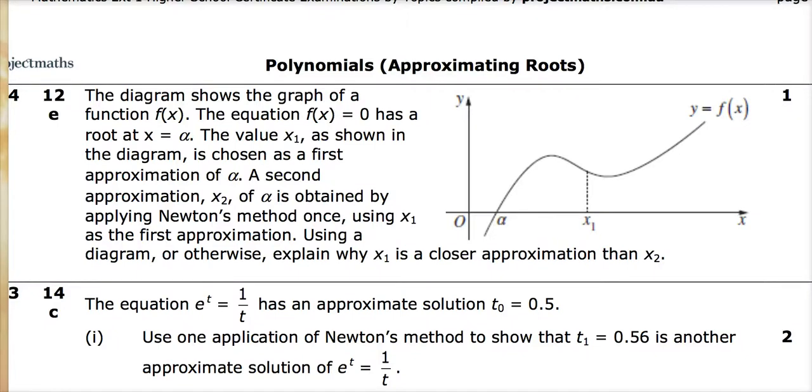Now we're just going to look at some past HSC questions, 2014 HSC question 12e. It says the diagram shows the graph of a function f(x) and there it is there. The equation f(x) equals zero has a root here at x is alpha, it's where that function cuts the x-axis.